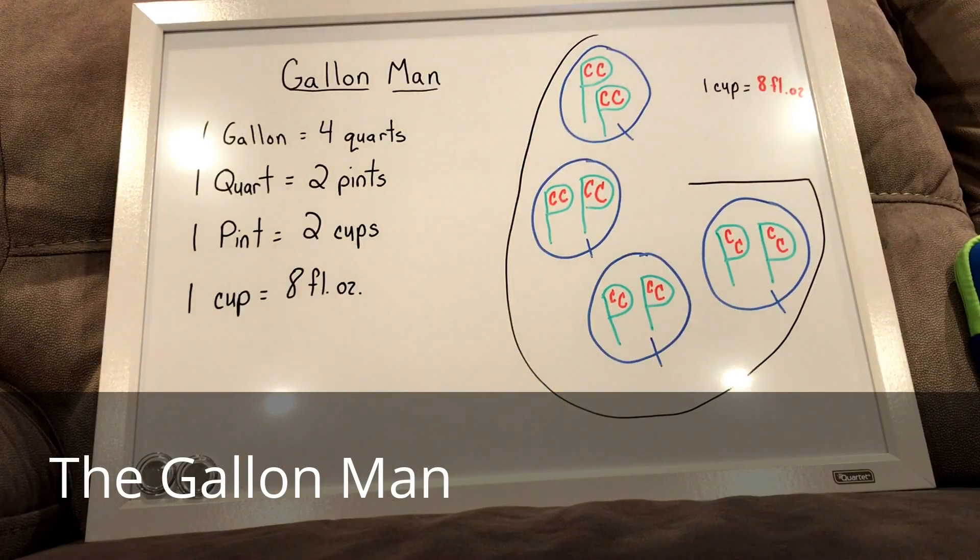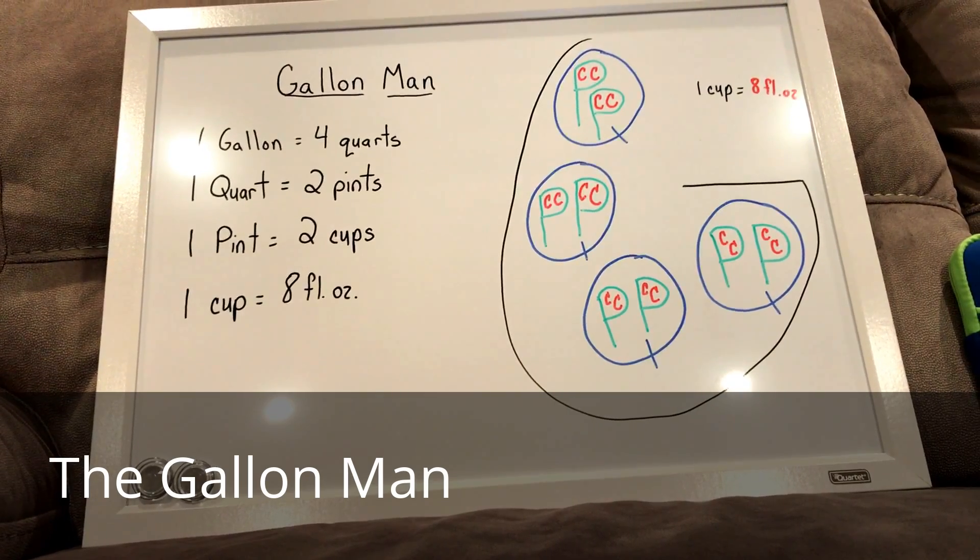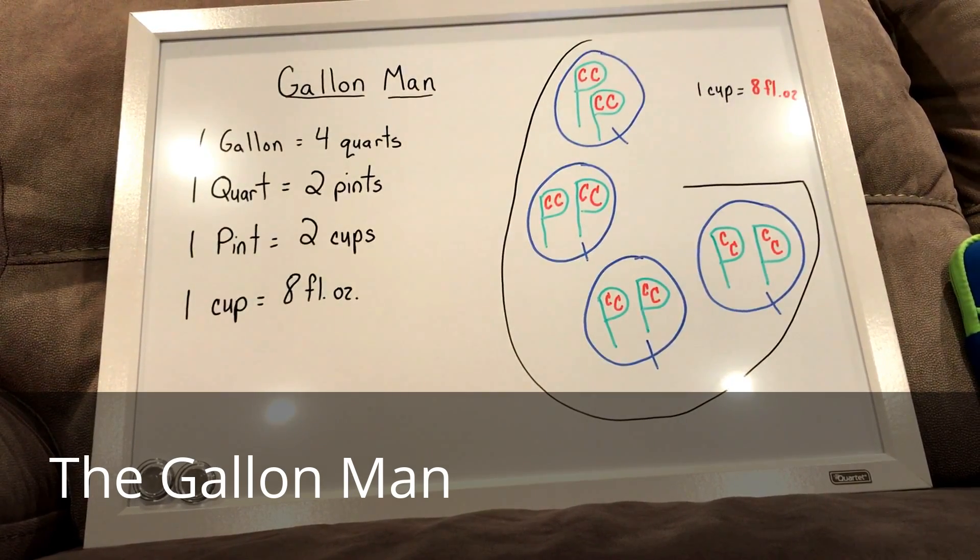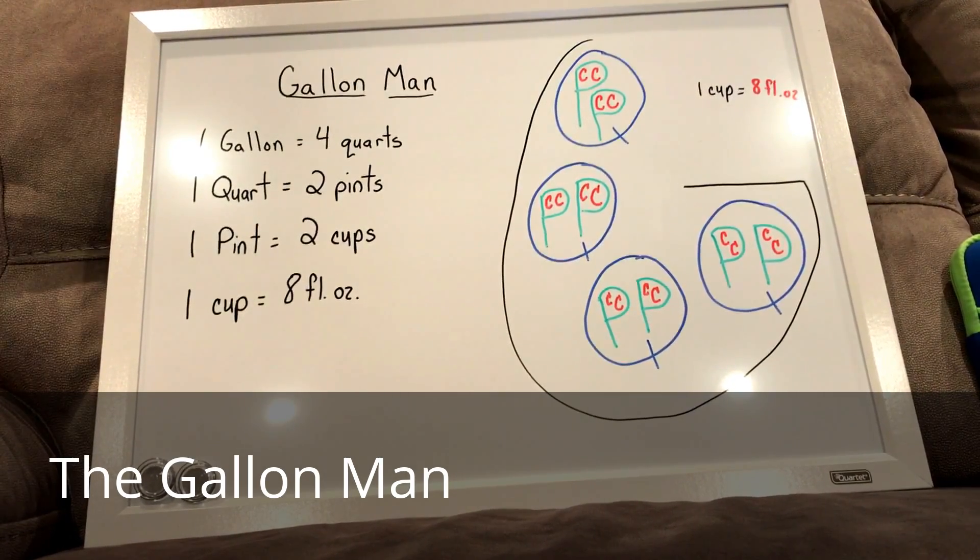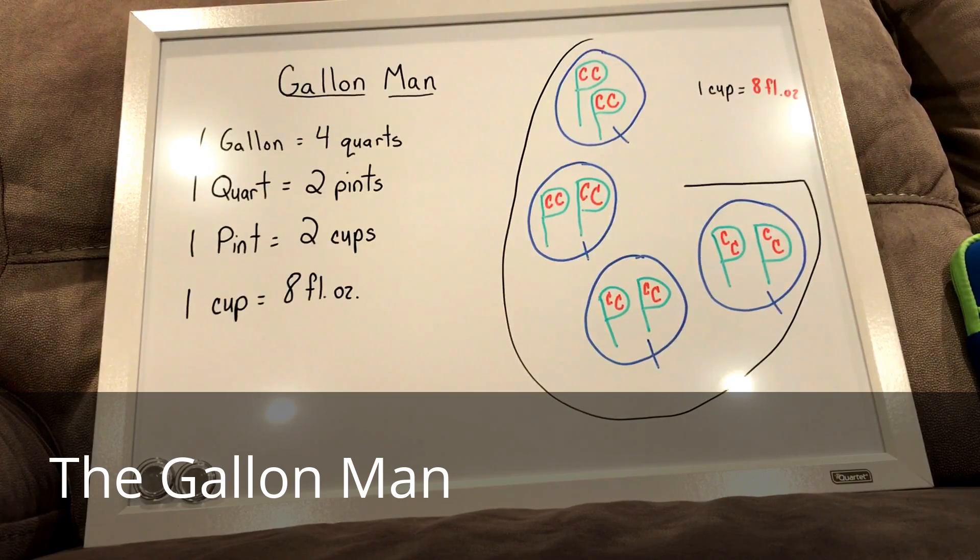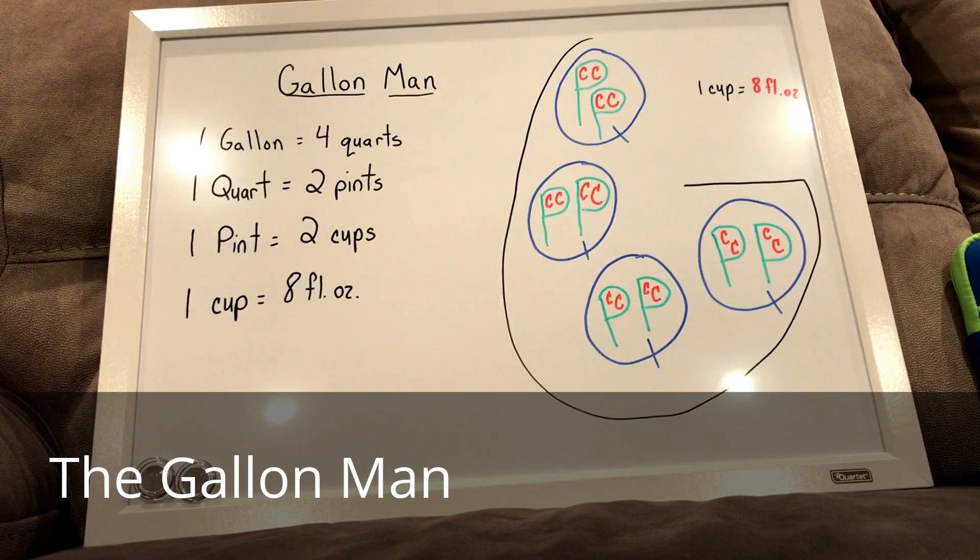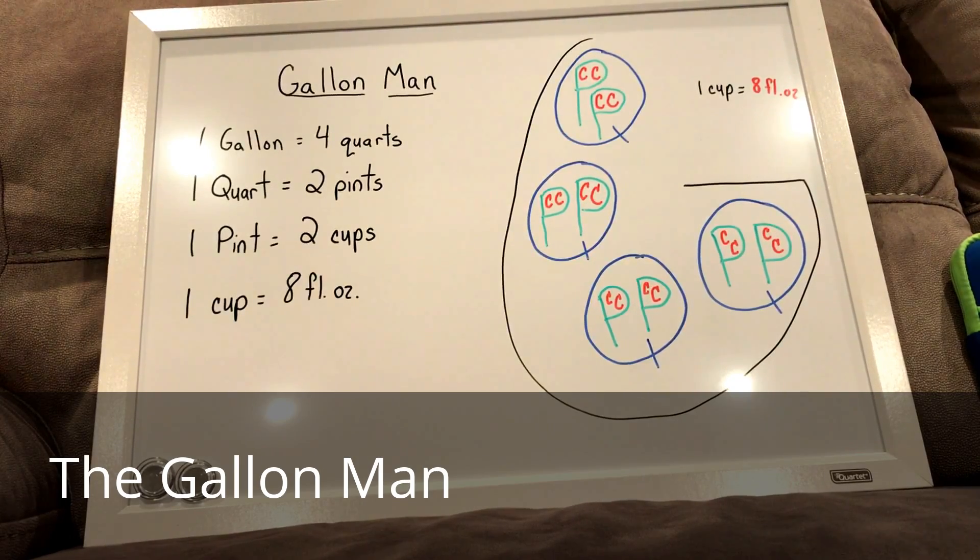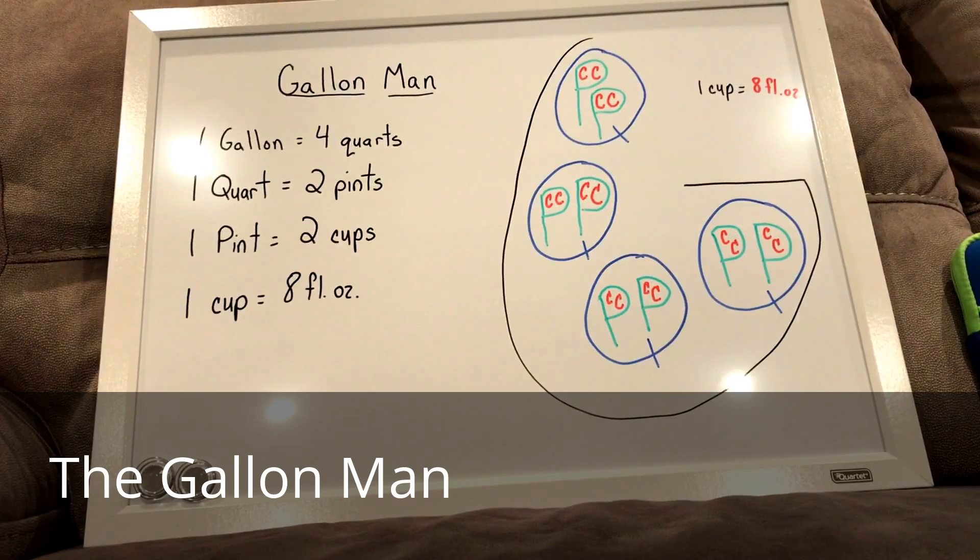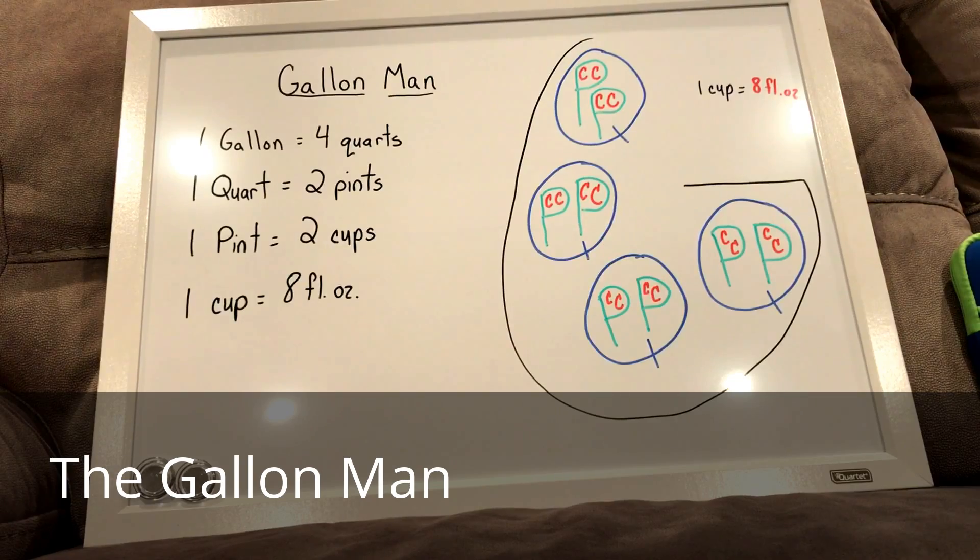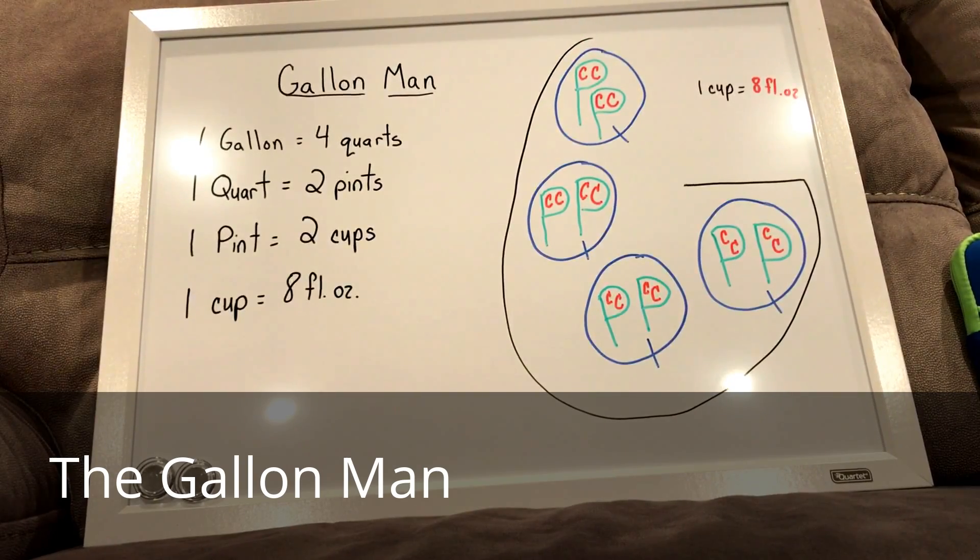The gallon man is an easy way to remember all of the units of capacity. If we take a look you'll see the big G. Inside of the big G, which stands for gallon, we have four Q's. Each of the Q's represents quarts. So there are four quarts in one gallon.